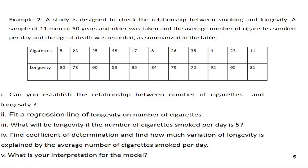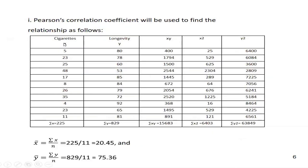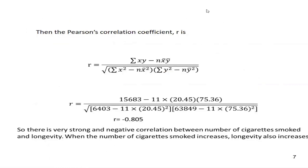Let us go. How can we proceed? First of all, find the relationship. Longevity is denoted by y because it is the dependent variable, and cigarette is the independent variable x. First, denote them x and y. For the correlation, we have to multiply x and y, get x squared and y squared, then get x-bar and y-bar. With n equal to 11, the summation is divided by 11. After getting these values, we calculate the correlation coefficient using the Carl Pearson correlation formula.